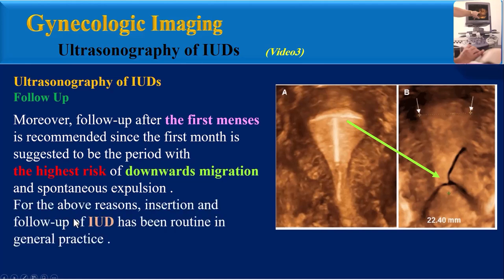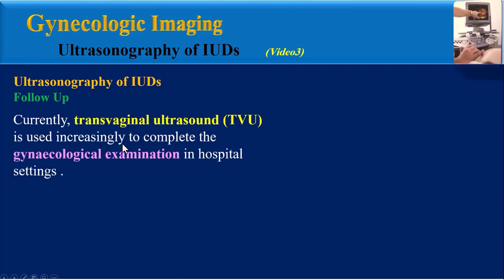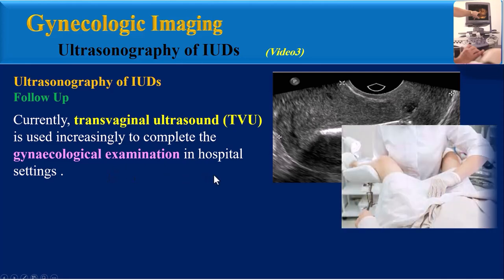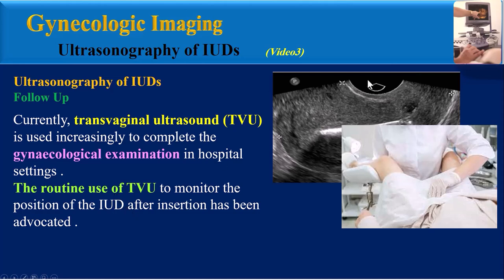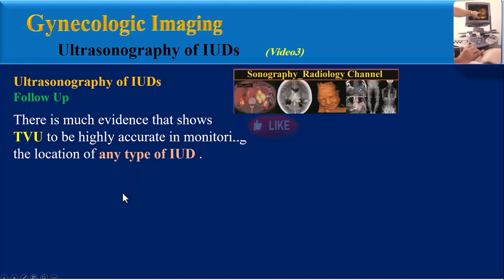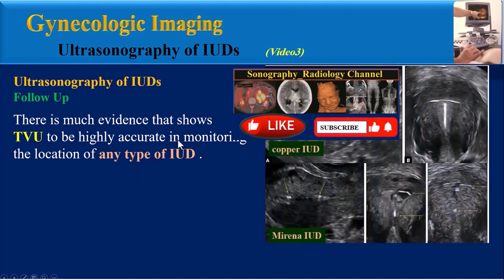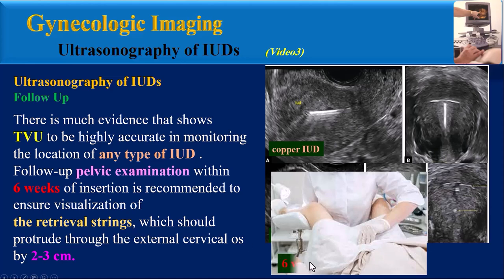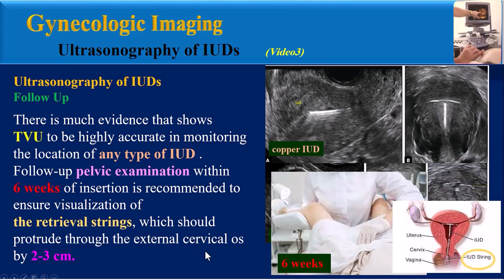Follow-up after the first menses is recommended, since this period carries the highest risk of downward migration and spontaneous expulsion. Transvaginal ultrasound is increasingly used to complete the gynecological examination. There is much evidence that transvaginal ultrasonography is highly accurate in monitoring the location of any type of IUD, whether copper or hormone-releasing. Follow-up pelvic examination within six weeks of insertion is recommended to ensure visualization of the retrieval strings, which should protrude through the external cervical os by two to three centimeters.